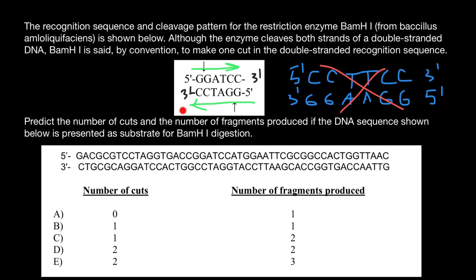Because BAMH1's recognition site is a palindromic sequence, if we find that sequence on one strand of the DNA, we instantly know we've also found the same sequence on the other strand. So we don't have to check both strands. If we find one, two, or three occurrences on one strand, the same number will be present on the other strand.